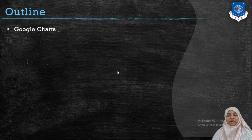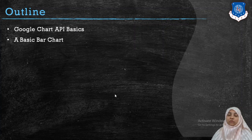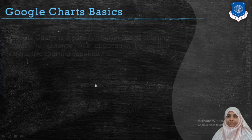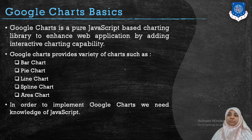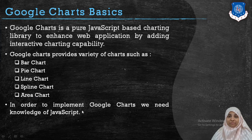In today's video we will learn how to add Google Charts into your web page. We will first cover the Google Chart API basics and using that API how to draw a bar chart. Google Chart is a pure JavaScript-based charting library which enhances your web application by adding charting capabilities. Different varieties of charts provided by Google include bar chart, column chart, pie chart, line chart, donut chart, area chart, spline chart, and many more.